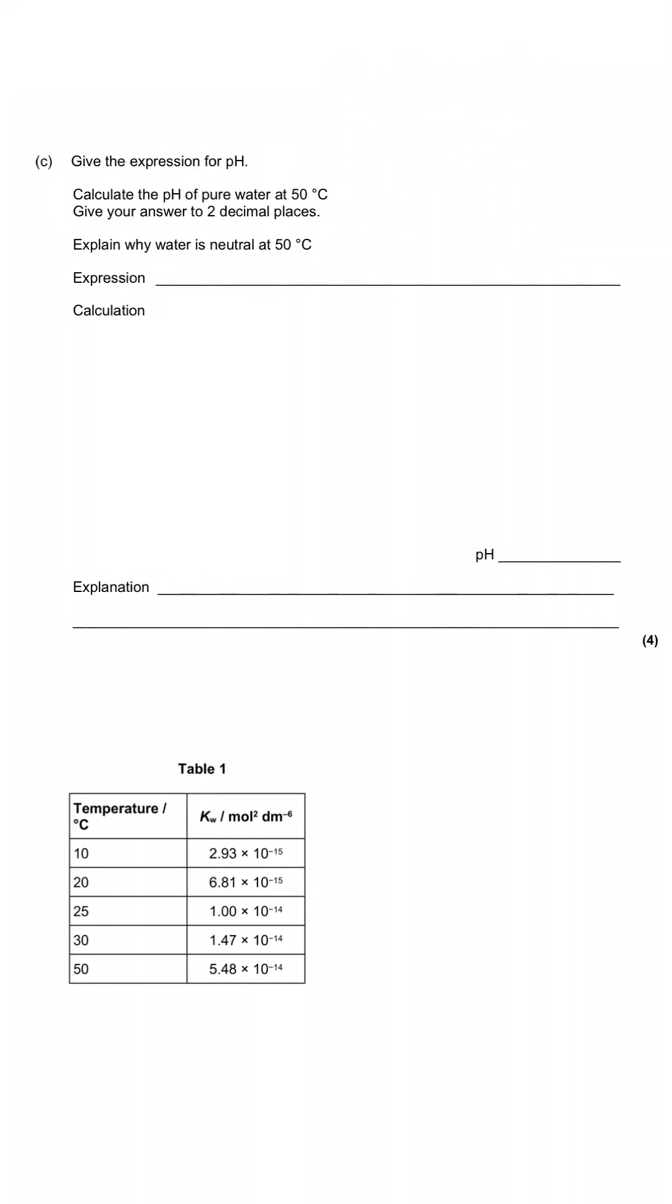In part C, we're asked to give the expression for pH, then to calculate the pH of pure water at 50 degrees, and we're commanded to give the answer to two decimal places. That's standard for pH values because it's a log scale and the two decimal places are important. Then we're asked to explain why water is considered neutral at 50 degrees C. First, the expression for pH is that pH is negative log to the base 10 of the hydrogen ion concentration.